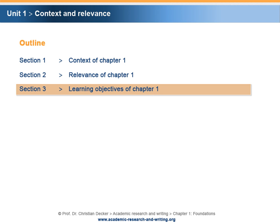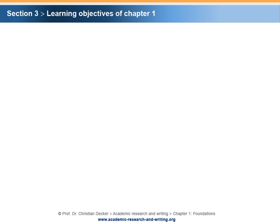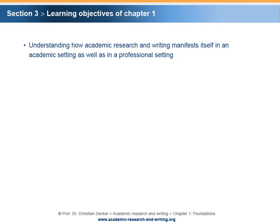Section 3 – Learning objectives of Chapter 1. What are the learning objectives of this chapter? After this chapter, you should have an understanding of how academic research and writing manifests itself in both an academic setting and a professional setting.